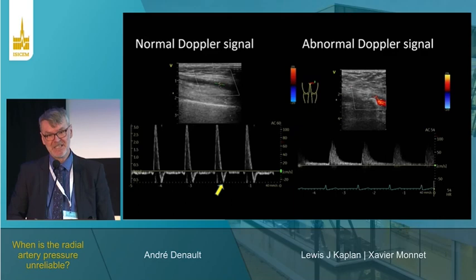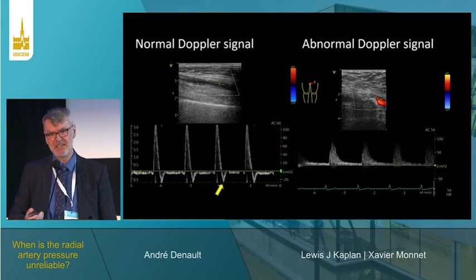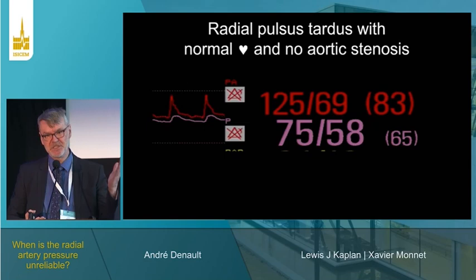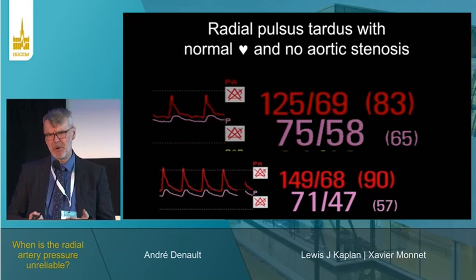Before putting a catheter in an artery, examine it with 2D and Doppler. Also look at the waveform. Normally, with a normal heart and no aortic stenosis, the dP/dT should be straight. If you see a pulsus tardus in the arterial signal when the heart is completely normal, something is wrong — this is another clue that the radial artery pressure may be unreliable.